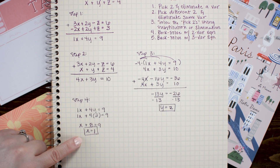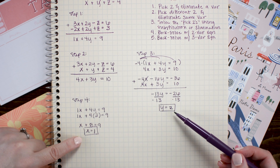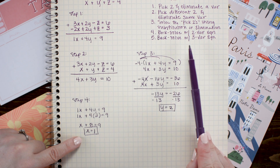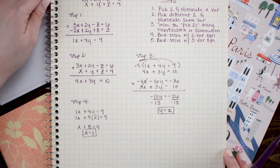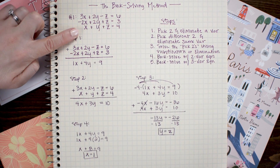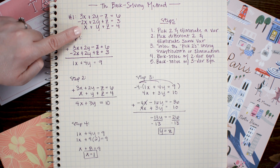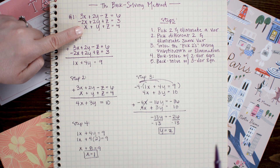Now we know that x equals one and y equals two. So we're going to do our final step and back-solve one more time to find z. This time we will back-solve with one of the original three-variable equations. I can choose any of those equations, but I'm going to choose the easiest one — the third one, which is x plus y plus z equals four. I'll plug in x equals one and y equals two and solve for z.